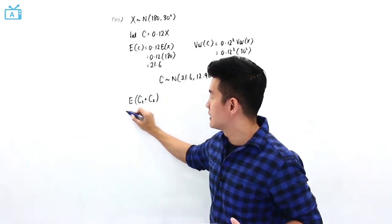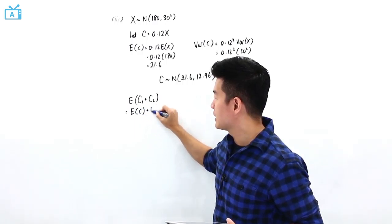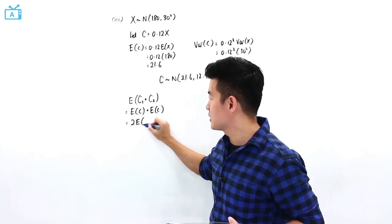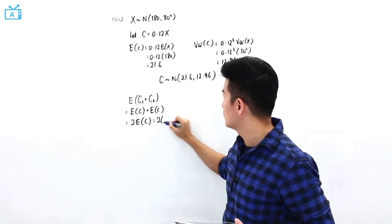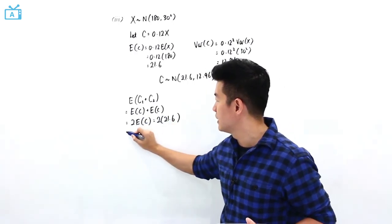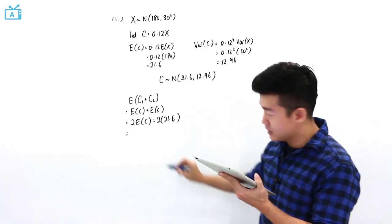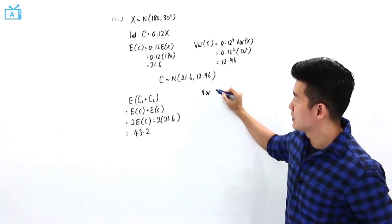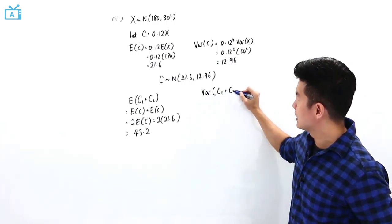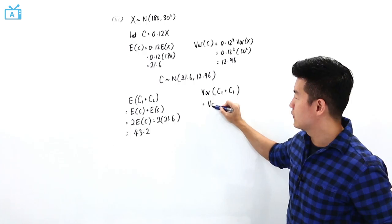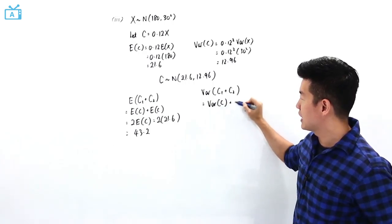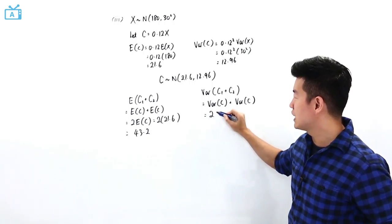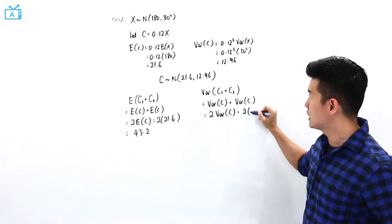The question is looking at two independent instances of C, which means we are looking at C1 plus C2. The expectation of C1 plus C2 is the expectation of C plus the expectation of C, which is two times the expectation of C. That is two times 21.6, giving an expectation of C1 plus C2 equal to 43.2.